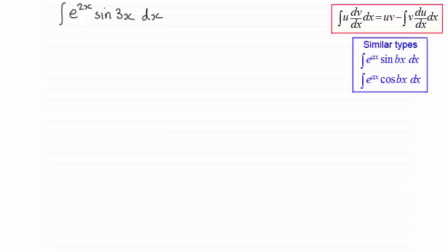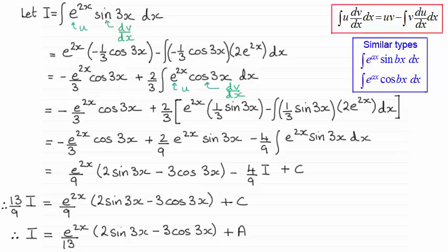Okay, welcome back if you had a go. Let's see how you got on. Well, the final answer then is e to the 2x over 13, and it's all multiplied with 2 sine 3x minus 3 cos 3x plus a constant of integration.